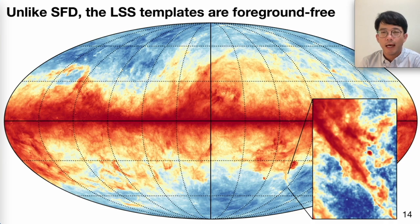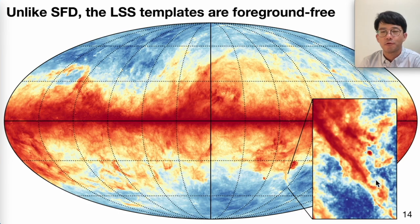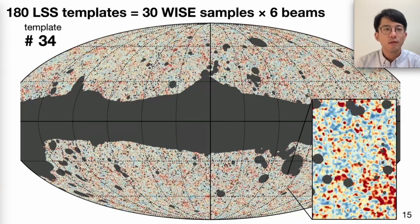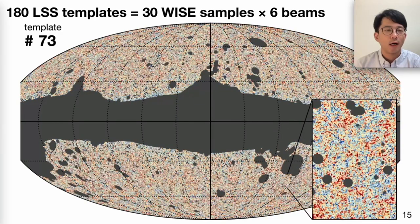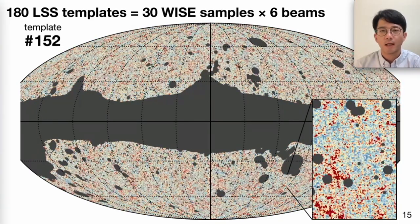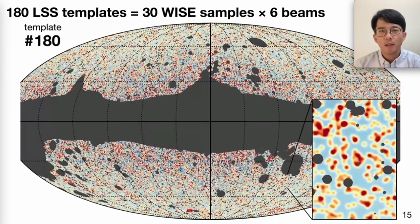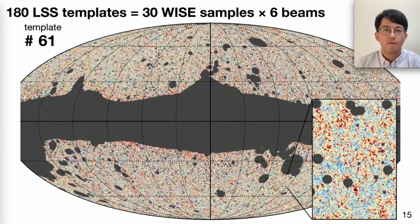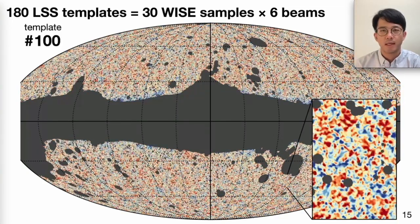To appreciate the difference between the extragalactic large-scale structure template and the Milky Way foreground, I zoom into a region just outside the Large Magellanic Cloud to show a spur of galactic cirrus. In the large-scale structure templates, you will see that this kind of distinct feature of Milky Way dust is absent. In total I have 180 large-scale structure templates, constructed from the overdensity fields of 30 WISE galaxy subsamples.